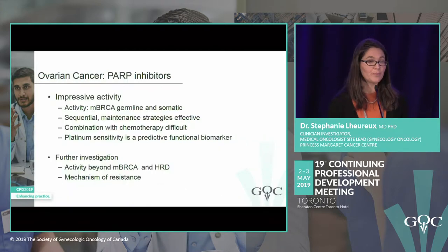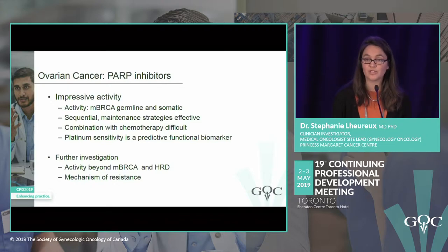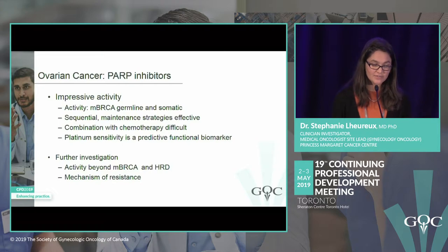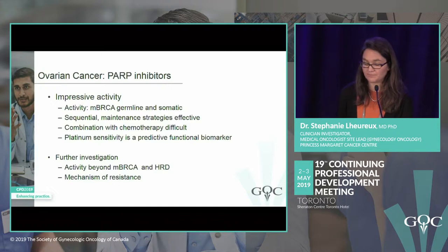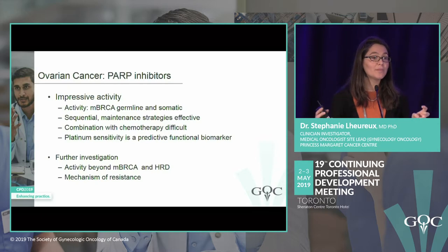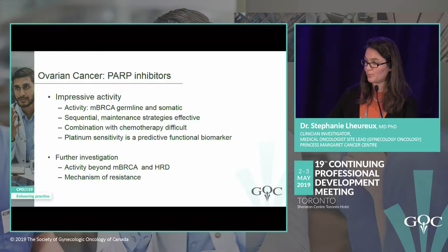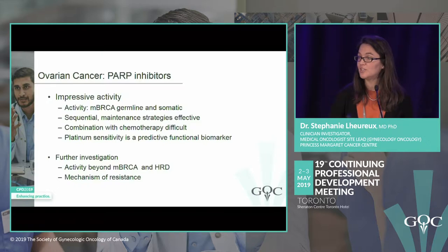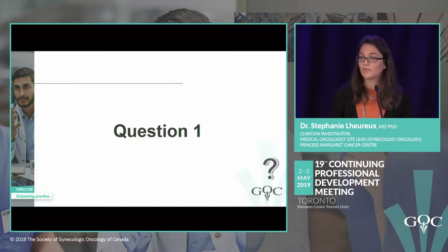In summary, we know PARP inhibitor activity in ovarian cancer is greatest in patients with BRCA mutation (germline or tumor), maintenance treatment post-chemotherapy is effective, combining with chemotherapy is difficult, and platinum sensitivity is a good clinical marker. We need further investigation to define which patients benefit beyond BRCA, and if moving PARP inhibitors to first line, we need to address resistance.